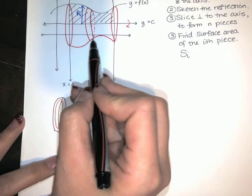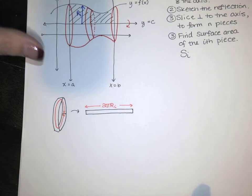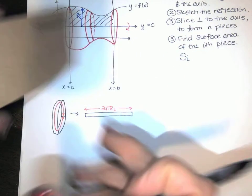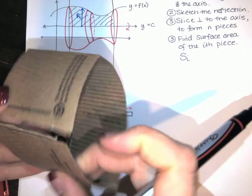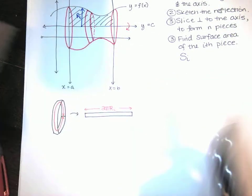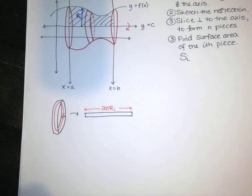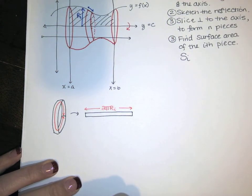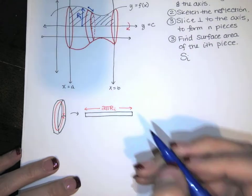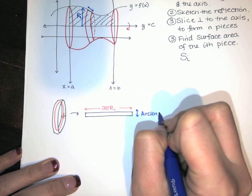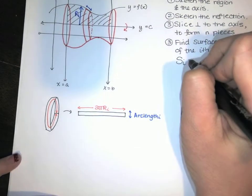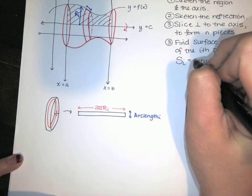Be careful: the other dimension is not Δx. Even though we used Δx for the width of the disk, the piece of paper has a little bit of curvature to it — it's not exactly a change in x, it's a little bit longer. That dimension is arc length — a tiny length of the curve. So S sub i equals circumference times arc length, which is the area of the i-th piece.